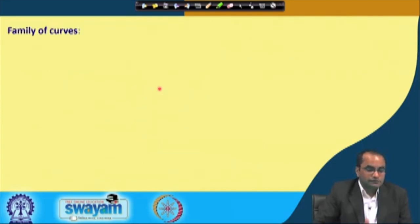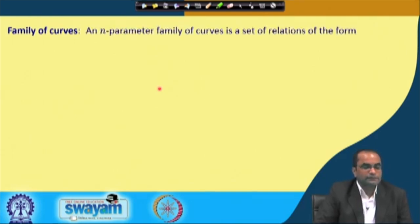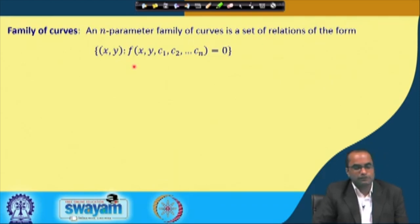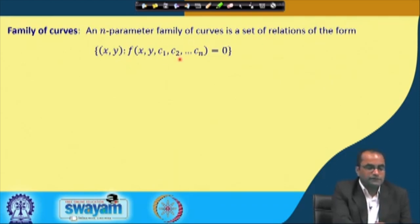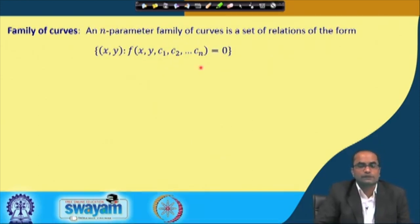Now we move toward the formation of differential equations. Before that, we introduce the concept of a family of curves. An n-parameter family of curves is a set of relations of the form f(x, y, c₁, c₂, …, cₙ) = 0, where c₁ through cₙ are n parameters. Changing these parameters gives different curves, hence the name family of curves.